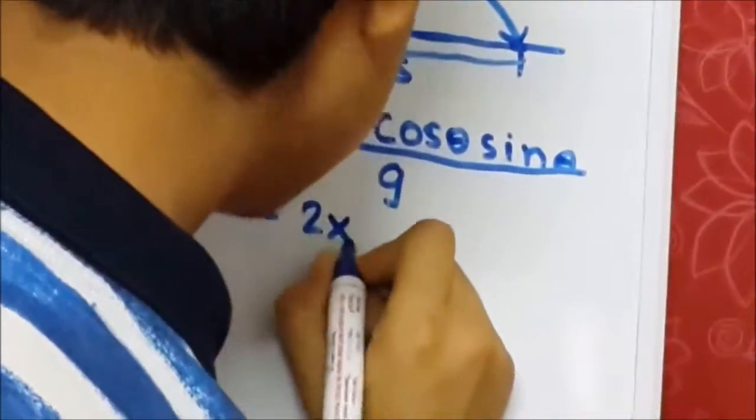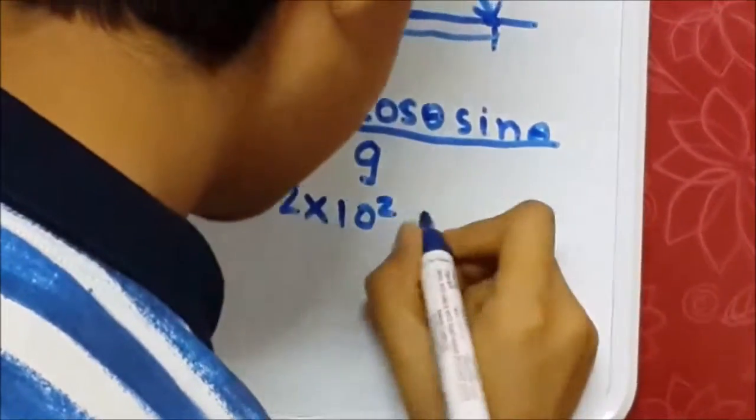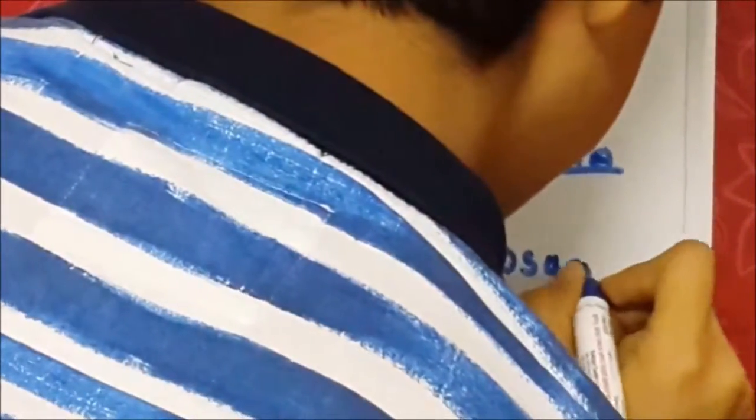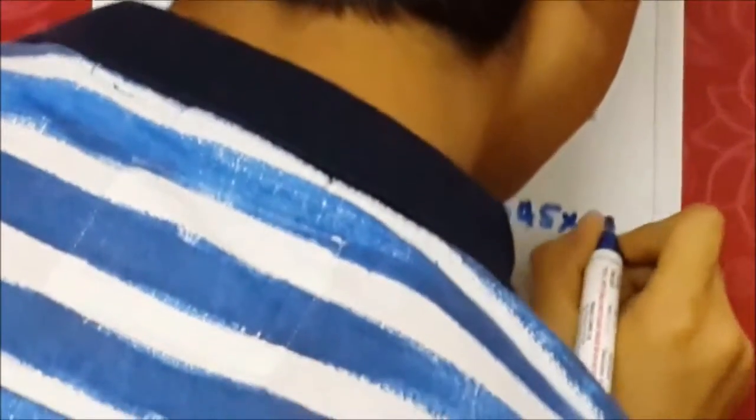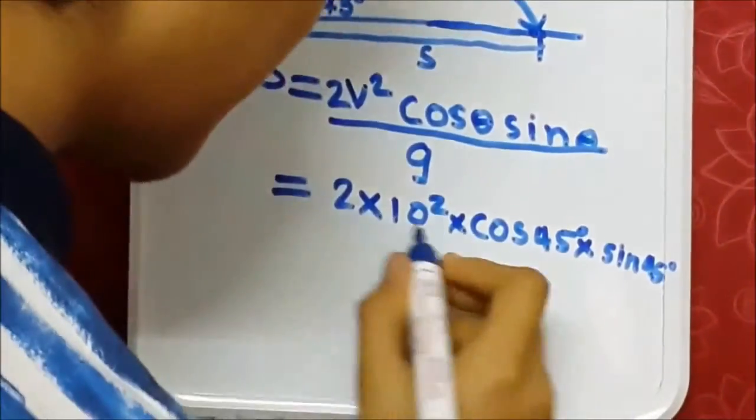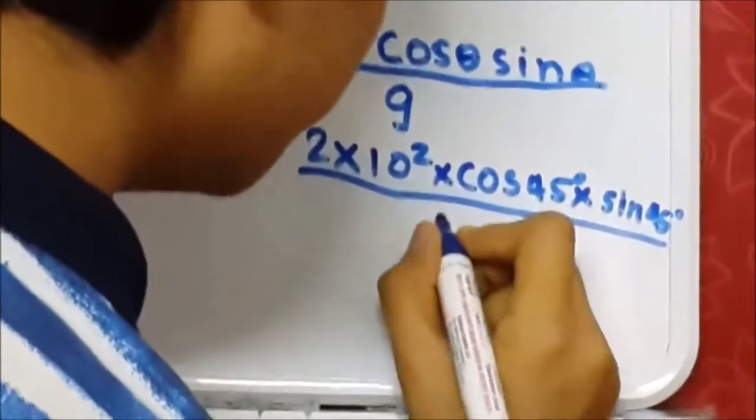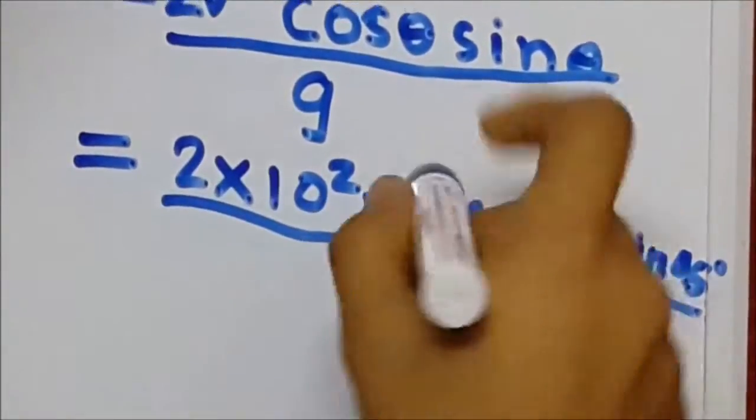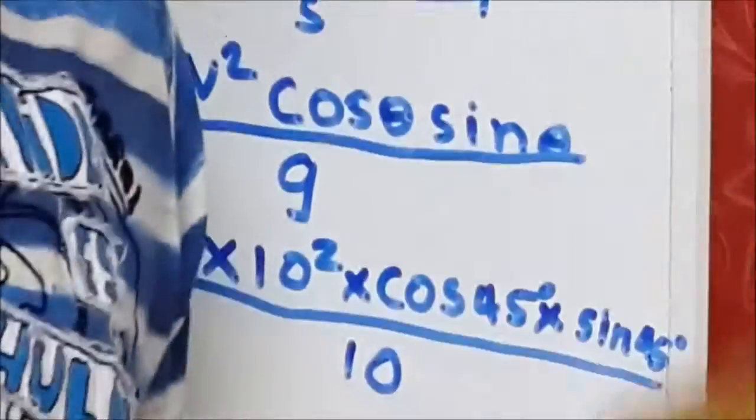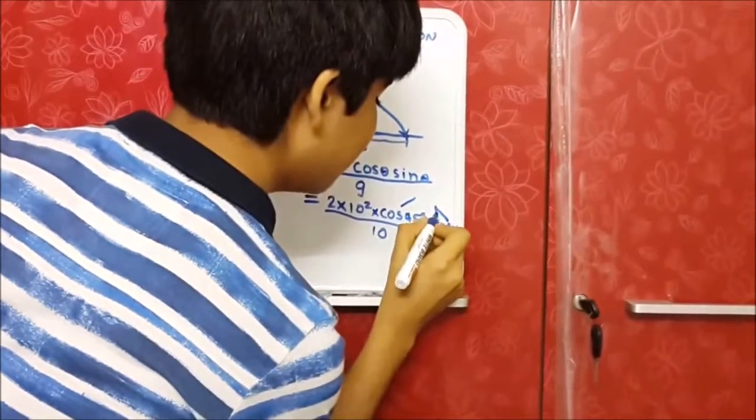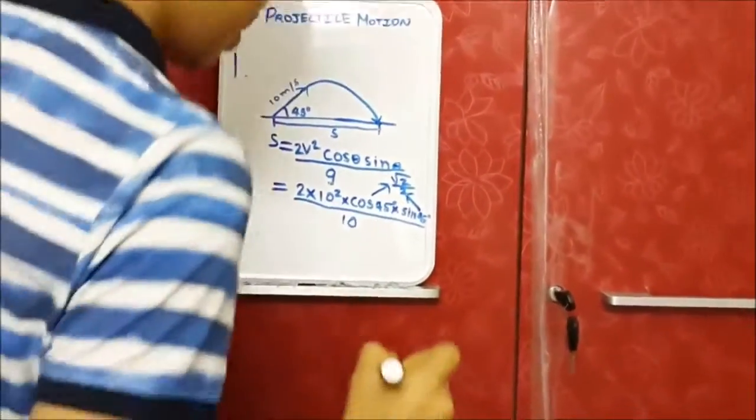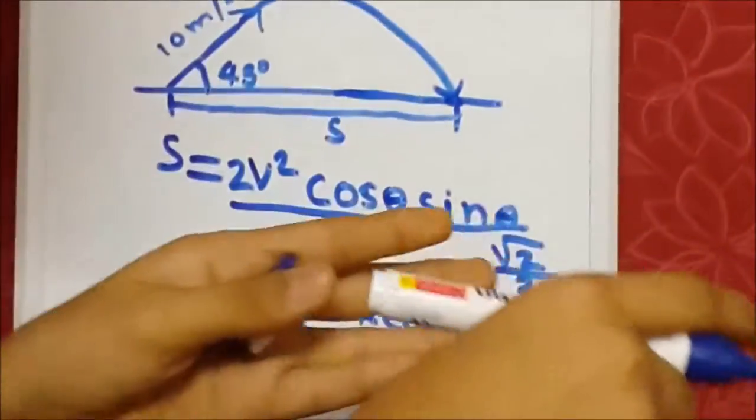It's equal to 2 into 10 squared into cosine 45 into sine 45, times divided by 10. So it's 200 and cosine 45 and sine 45 is the same which is square root of 2 divided by 2. Now what happens? Square root of 2 divided by 2 times square root of 2.